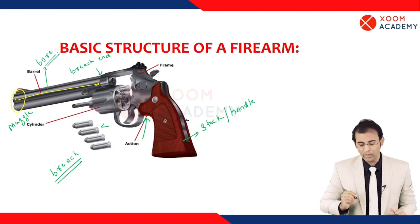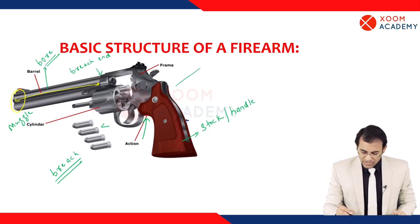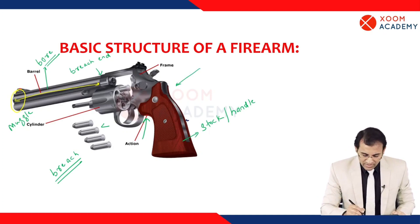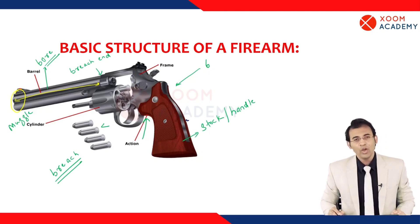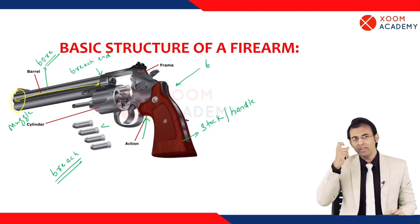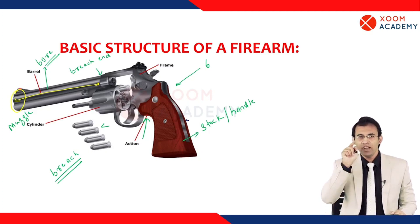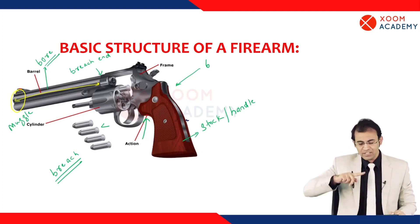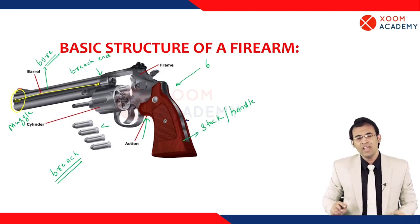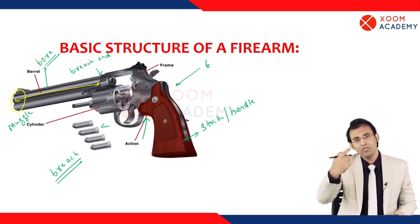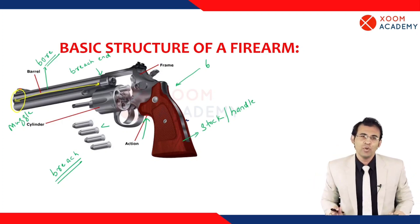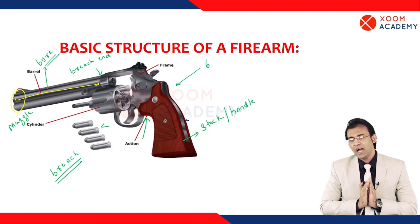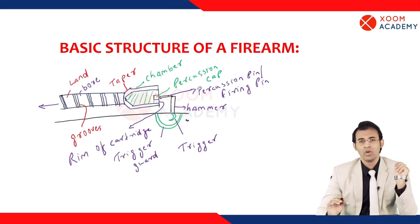In a revolver there is also a cylinder. In the cylinder of a revolver there will be six bullets. Whenever you fire the firearm, one bullet goes out, and then due to a spring the cylinder rotates by itself so the next bullet comes into position. When you fire again, the second bullet goes out, and the spring rotates the cylinder again — and so on.